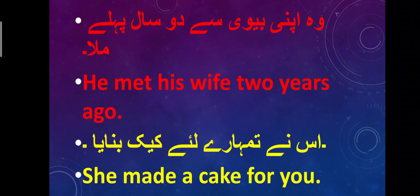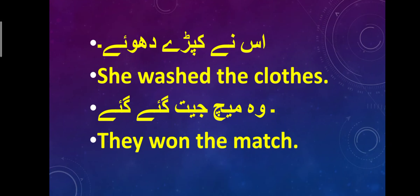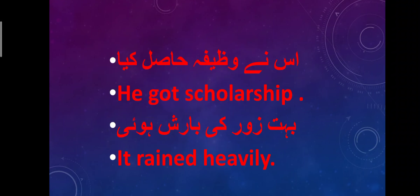'Isne tumhare liye cake banaya' — She made a cake for you. Now if you look at all these sentences, you will notice that the action happened in the past, and every sentence has subject + second form of verb + object. 'Isne kapre dhoye' — She washed the clothes. 'Woh match jeet gaye' — They won the match. 'Isne wazifa hasil kiya' — He got a scholarship. 'Bahut zor ki baarish hui' — It rained heavily.